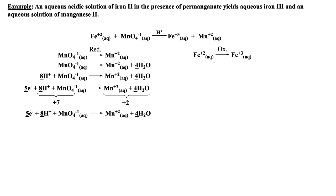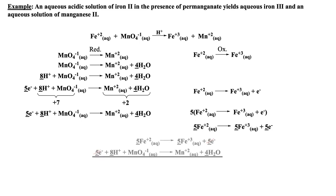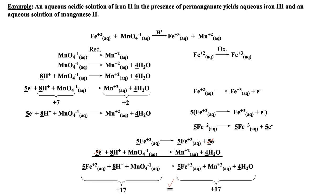Let's repeat these same steps to the oxidation half-reaction. The iron atoms are balanced. There are no oxygens, so I do not have to add water molecules or protons to balance, which leaves equating the charges by adding one electron to the product side. Before the two half-reactions can be added, we need to assure that electrons will cancel, which requires a distribution of five to the oxidation half-reaction. Now the two half-reactions can be added and the five electrons canceled. Checking charges and numbers of atoms on both sides of the equation indicate the redox reaction is balanced.